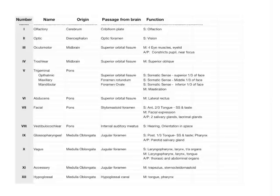You're going to need to know the numbers, the names, and the origins — basically where the nerve comes from, what part of the brain it comes out of. There are passageways from the brain: all those foramina and fissures are passageways for many of these cranial nerves so they can get from the brain out into the tissues they interact with. And the last column, function, gives you some basics as to what the nerve is doing.